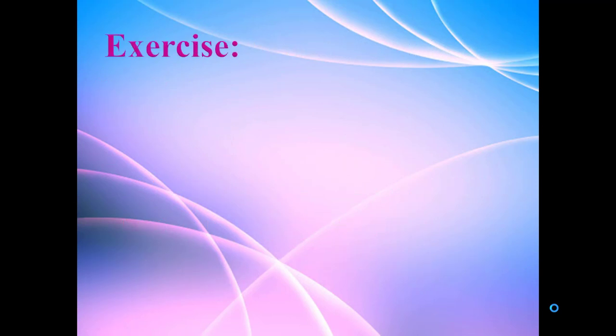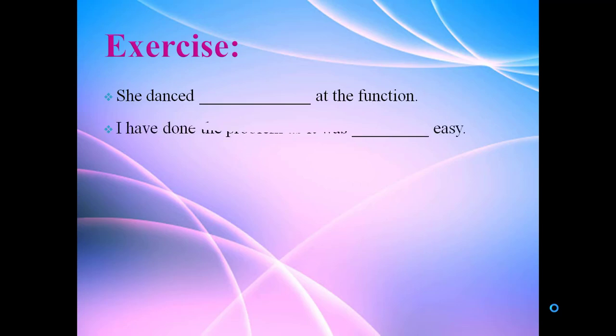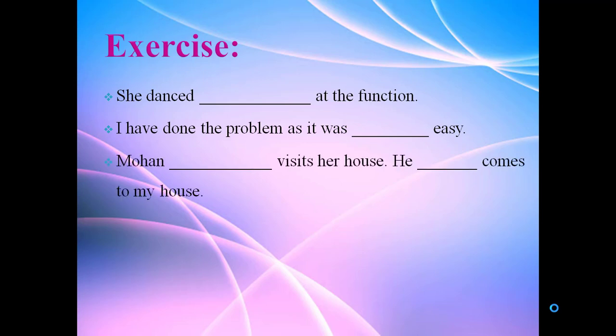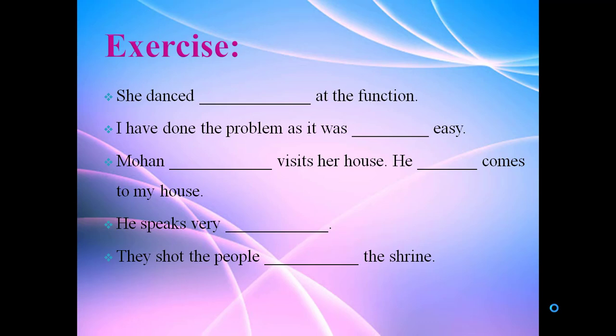And finally, some exercise for your practice. Here you have five questions. First: she danced ___ at the function. Second: I have done the problem as it was ___ easy. Third: Mohan ___ visits her house. He ___ comes to my house. Fourth: he speaks very ___. Fifth: they shoot the people ___ the train.